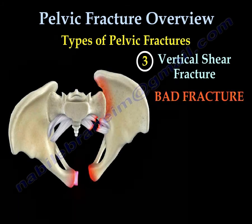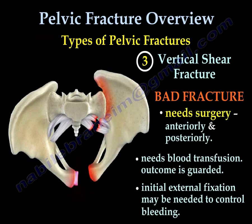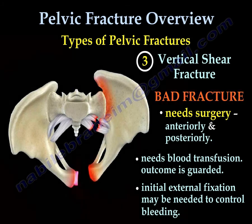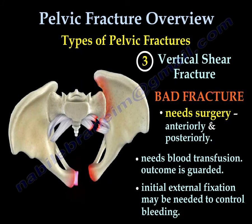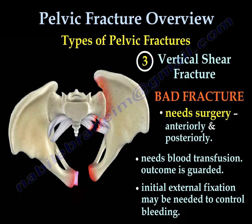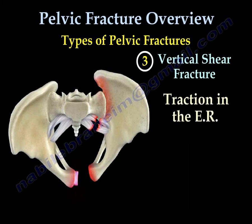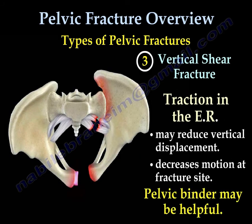The third type is the vertical shear fracture — it is a bad fracture. It needs surgery both anteriorly and posteriorly, and requires extensive blood transfusion. Outcome is guarded. An initial external fixer may be needed to control bleeding. Traction may be used in the emergency room to reduce vertical displacement and decrease motion at the fracture site. A pelvic binder may also be used in the emergency room.